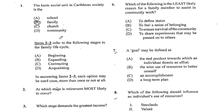Items 2-3 refer to the following stages in the family life cycle: A. Beginning, B. Expanding, C. Contracting, and D. Acquainting. In answering items 2-3, each option may be used once, more than once, or not at all. Therefore, you're going to be using beginning, expanding, contracting, and acquainting to answer items 2 and 3. Here goes the question at number 2.